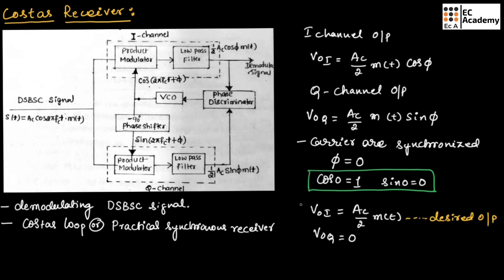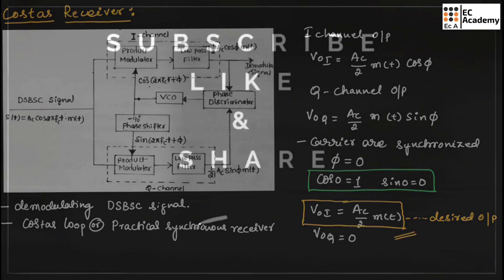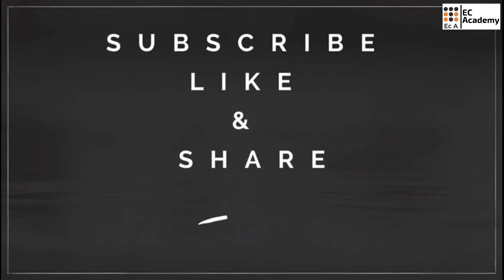Therefore, the output of the Costas receiver will always be equal to (Ac/2)·M(t). This is the output of the Costas receiver. Hope you have understood the topic. Thank you.